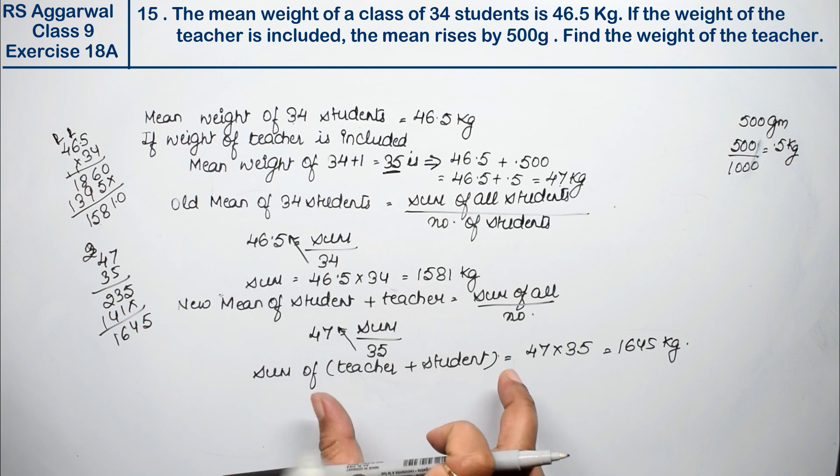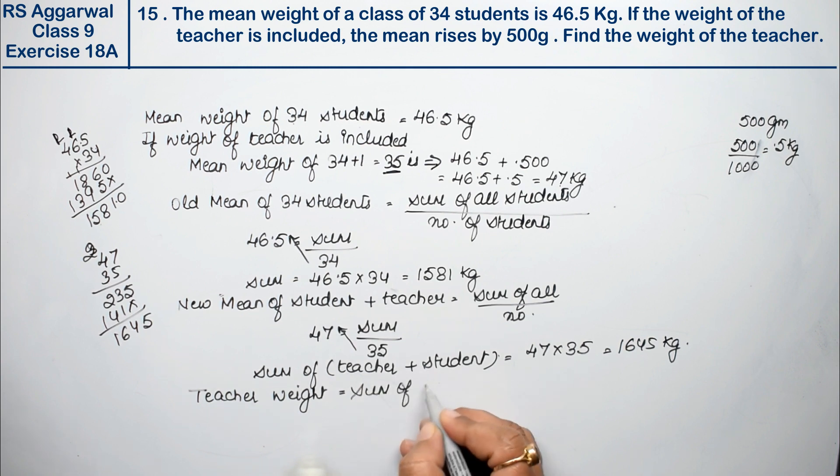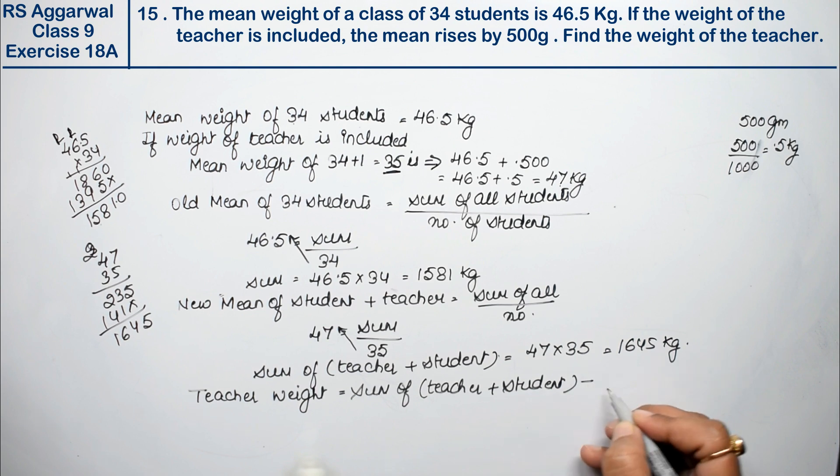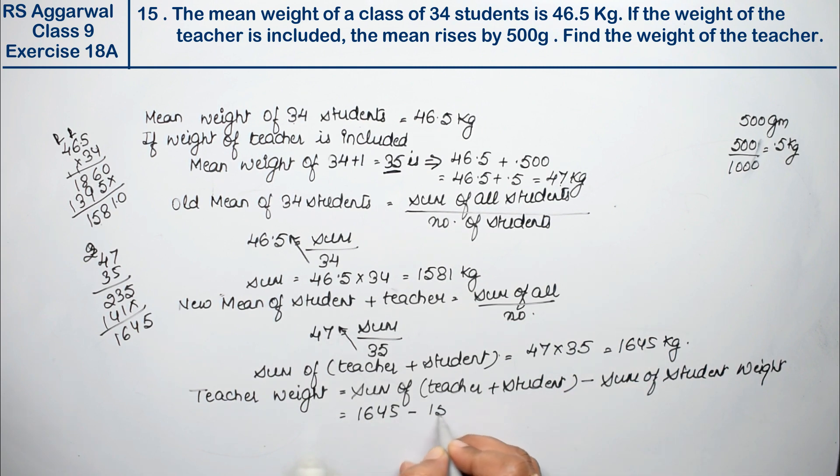So teacher's weight, how will it come out? From the weight that had teacher and student, we'll remove the student's weight. Then our teacher's weight will come out. So we can write: teacher weight equals sum of teacher plus student minus sum of student weight. So this is how much? This is 1,645 minus 1,581. So how much? 5 minus 1 is 4, and 14 minus 8 is 6 kg. The answer is 64 kg.